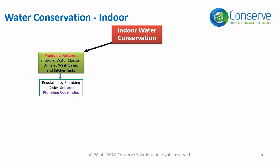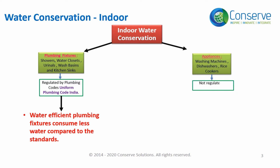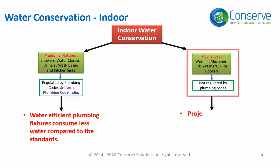In order to reduce water consumption, projects must use plumbing fixtures which consume less water compared to the standard — that is, water-efficient plumbing fixtures. Appliances include washing machines, dishwashers, etc. Appliances are not regulated by plumbing codes, so to reduce water consumption from appliances, projects should use certified or labeled appliances.